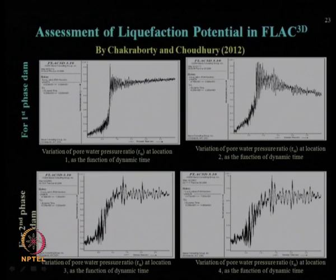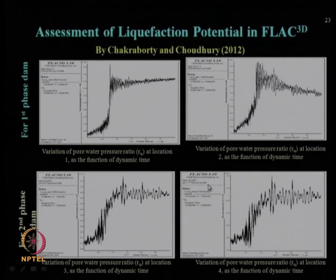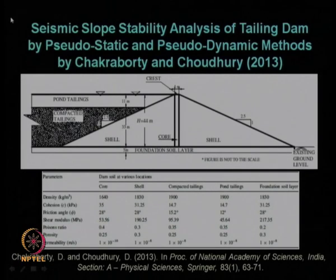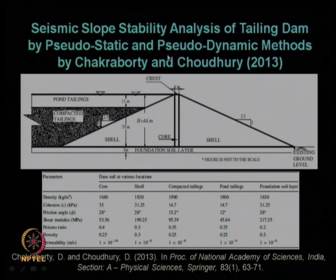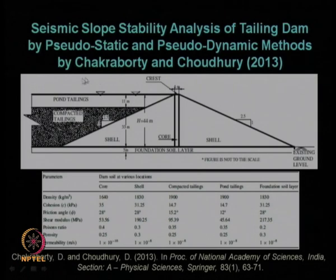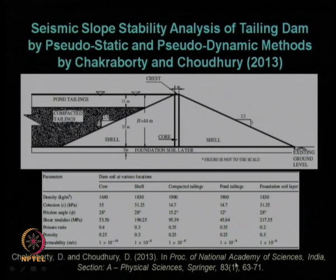The behavior of the first and second phases of the dam under liquefaction conditions was analyzed. In FLAC 3D, the typical output for liquefaction analysis at different heights and locations is obtained. Seismic slope stability analysis was also conducted using both the pseudo-static approach and the new pseudo-dynamic approach. This assumed tailing dam section — not the actual one — has results available in the publication by Chakravarti and Choudhury 2013, Proceedings of the National Academy of Sciences, Springer publication.